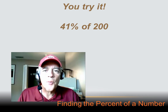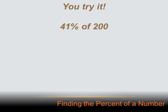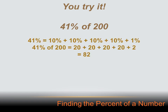Hit the pause button, do the problem, then hit your forward key. 41% of 200. Well, 41% equals 40% plus 1%, which is the same as 10% plus 10% plus 10% plus 10% plus 1%. 10% of 200 is 20, and there are four of those because it's 40%, plus 1% of 200 which is 2. So 41% of 200 equals 20 plus 20 plus 20 plus 20 plus 2, or 82.